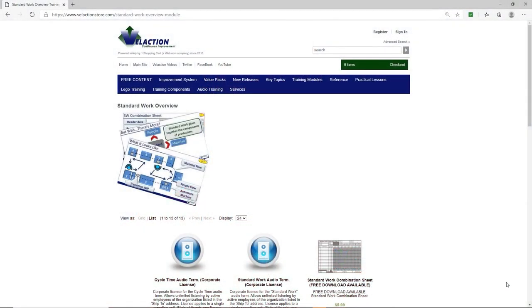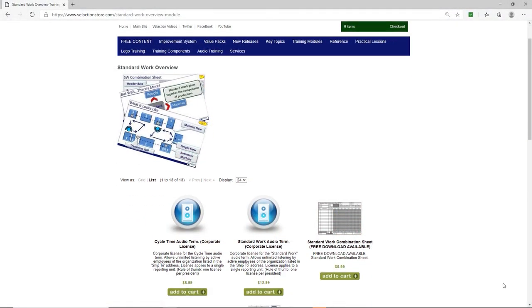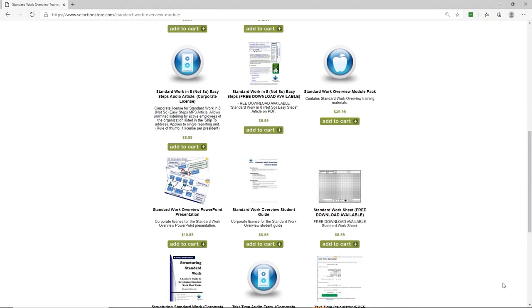This video comes from Velaction's Lean training system, which takes a module-based approach to learning about continuous improvement. Modules include a PowerPoint presentation and student guides for every video, plus there are many exercises and quizzes as well. There's also a whole host of supporting content in the form of terms in our continuous improvement companion and downloadable articles. Our modules are currently available in our store and as downloads at Velaction videos.